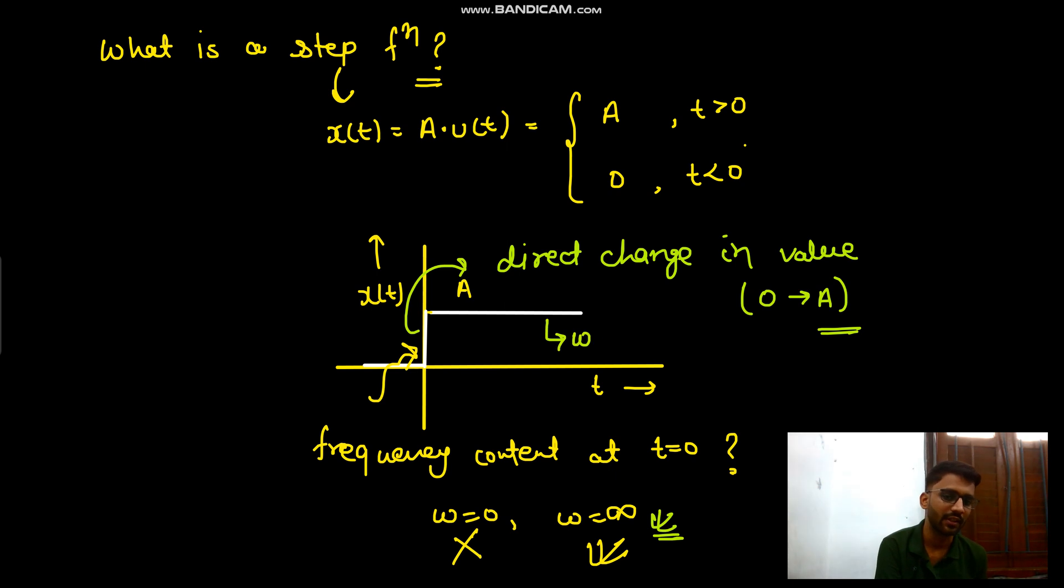At steady state, what is the frequency content? The frequency content is 0 because this is DC. And at the jump, the frequency content is omega goes to infinity. So that you should know - that's a good concept. By that we will solve many problems. Thank you.